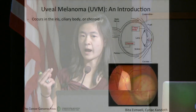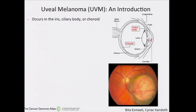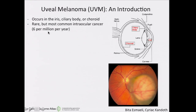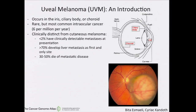Just a quick introduction to uveal melanomas. The uvea is a layer of your eye right underneath your sclera, which is the white part of your eye, and it consists of the iris, the ciliary body, and the choroid. These tumors are rare, but they're the most common intraocular cancer, occurring at a rate of about six per million per year. Over 70% of UVM patients actually develop liver metastasis as the first and only site, despite less than 2% having clinically detectable metastases at time of presentation.